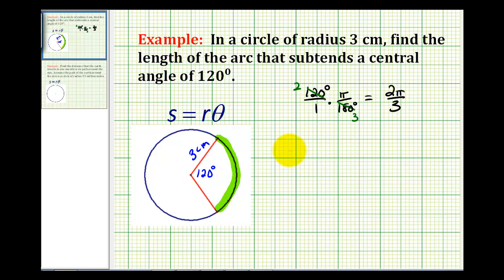So this green arc length is equal to the radius, three centimeters, times two pi over three radians. And this simplifies nicely. The threes simplify out.